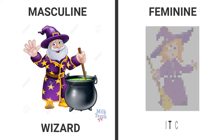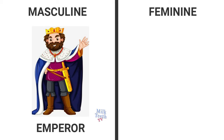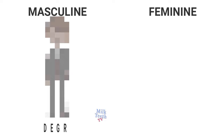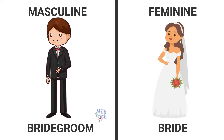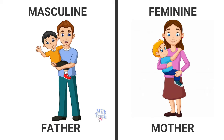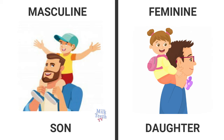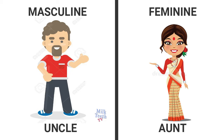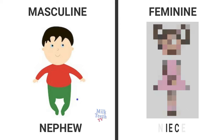Wizard — witch. Emperor — empress. Poet — poetess. Bridegroom — bride. Father — mother. Son — daughter. Brother — sister.